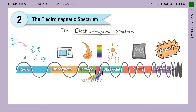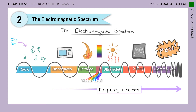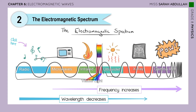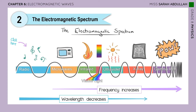Going from left to right — from radio to gamma — the frequency is increasing and the wavelength is decreasing. We can divide the spectrum using visible light as a boundary into two parts: low energy waves on the left and high energy waves on the right. We'll look at that in the next slides.